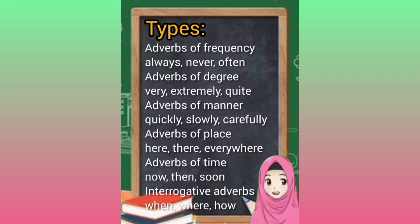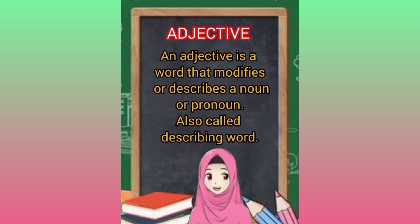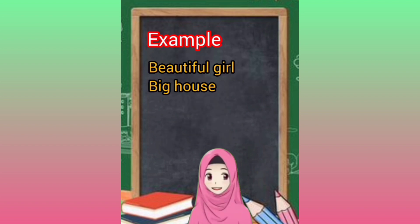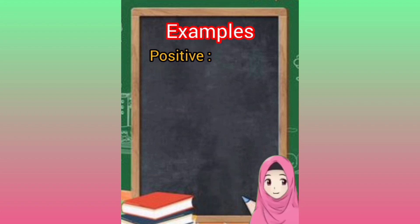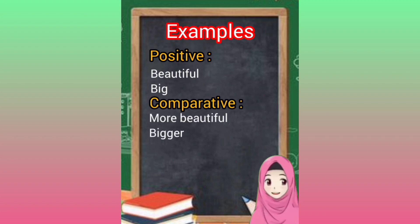Adverbs of place: here, there, everywhere. Adverbs of time: now, then, soon. Interrogative adverbs: when, where, how. An adjective is a word that modifies or describes a noun or pronoun — also called a describing word. Example: beautiful girl, big house. Degrees: positive, comparative, superlative. Examples: positive — beautiful, big; comparative — more beautiful, bigger.